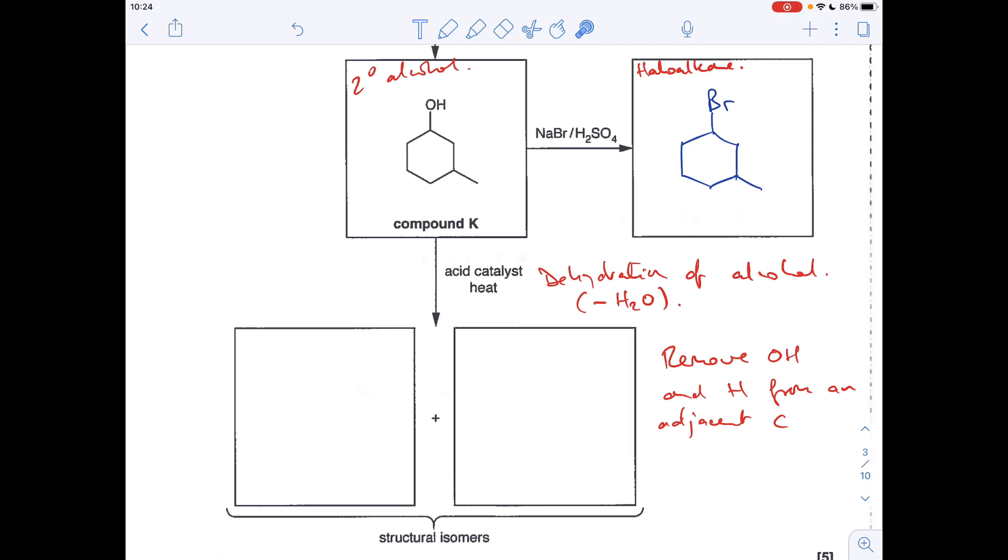To get the alkene structure, we need to take the OH off, obviously, and we take an H from an adjacent carbon. So we can take the OH and that H or the OH and that H. So the structural isomers would look like that.